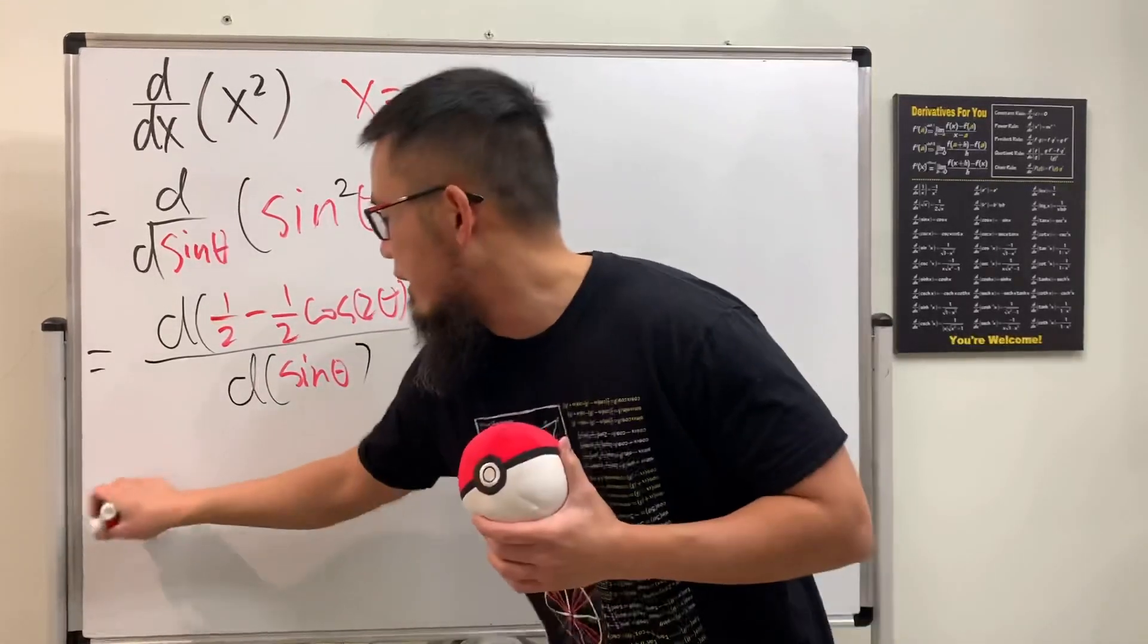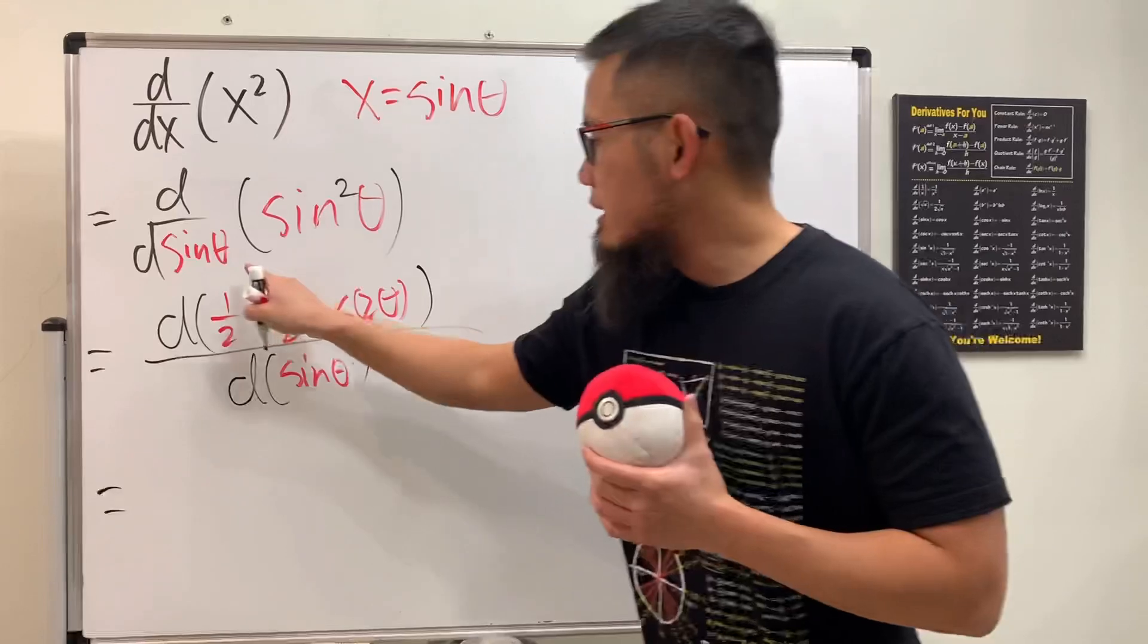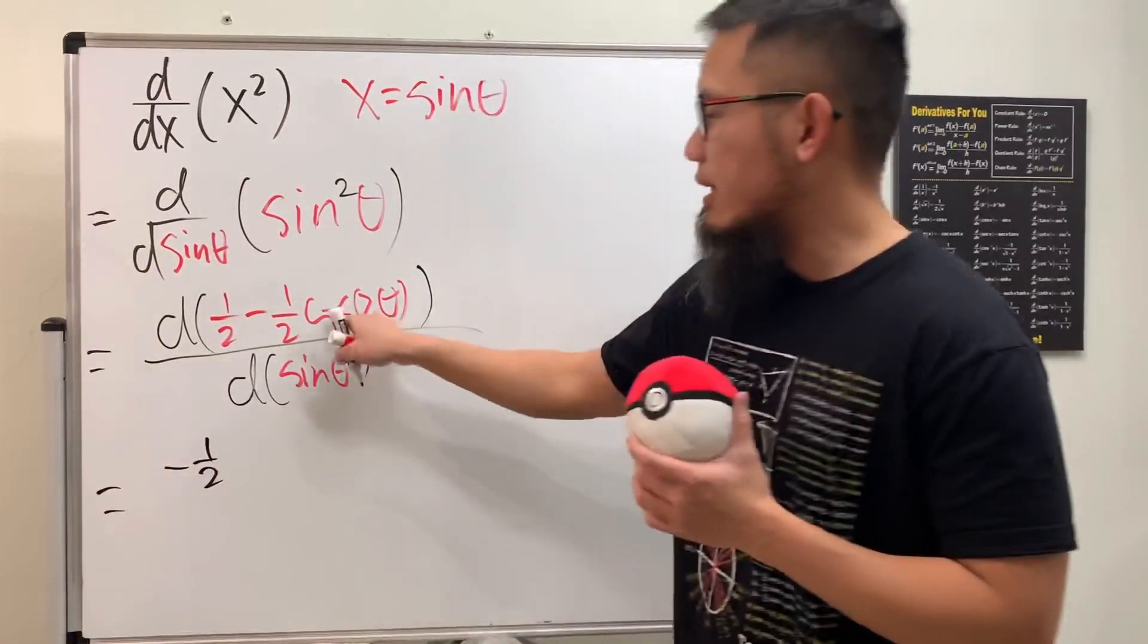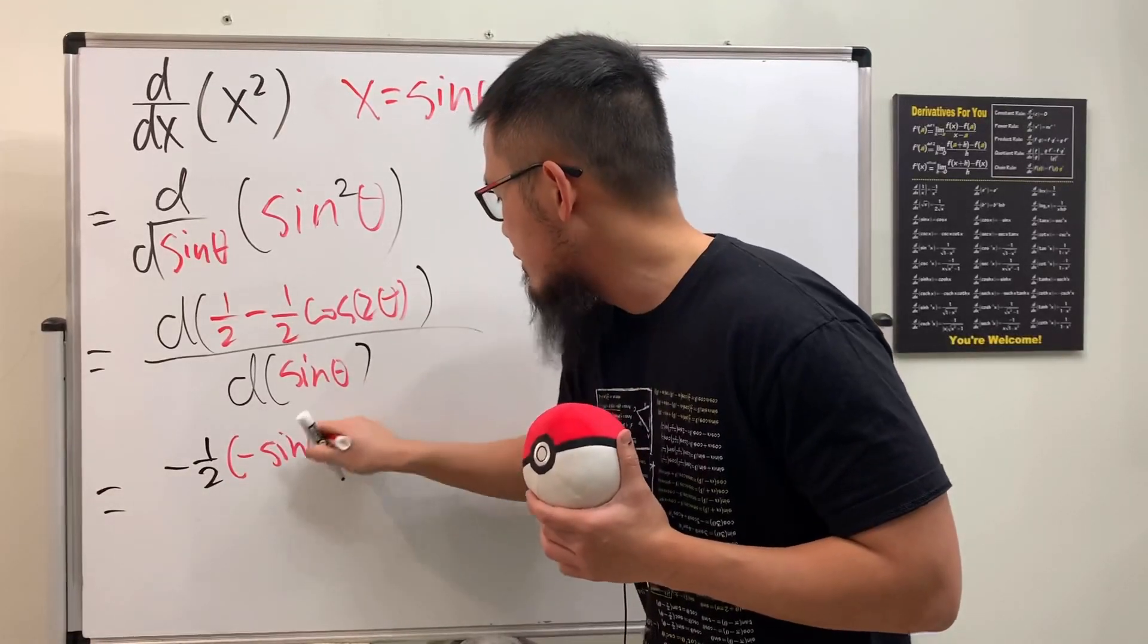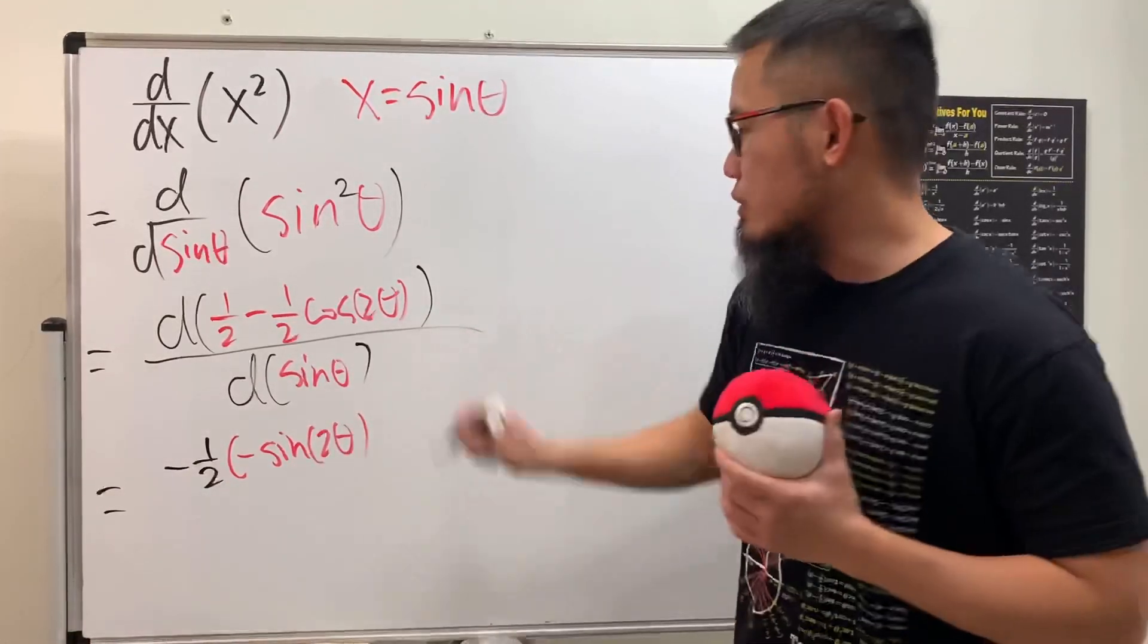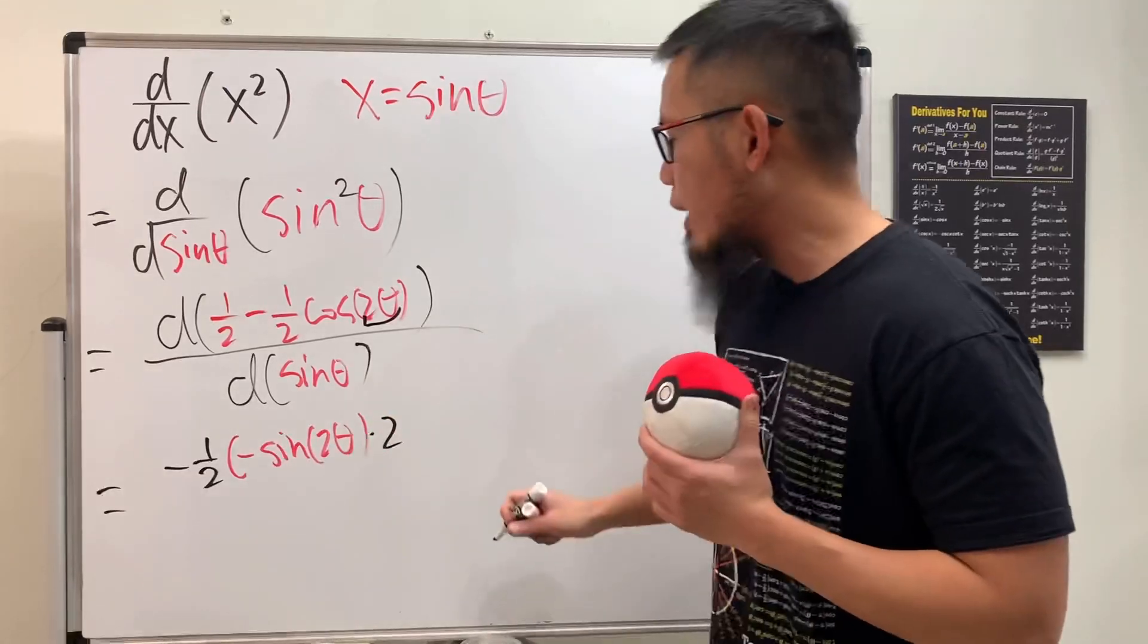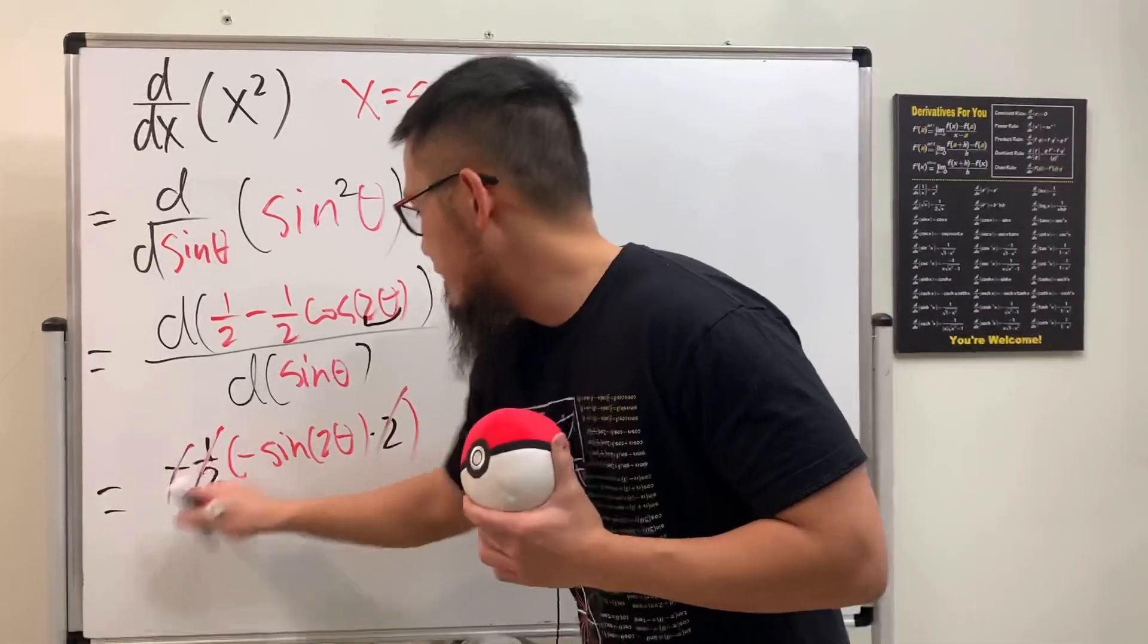Now differentiate this. This is just going to be zero on the top. We have negative 1/2, and then the derivative of cosine is equal to negative sine, and the input stays the same. Don't forget to use the chain rule, so multiply by the derivative inside, multiply by 2. So you see that this and that cancel, negative negative also becomes positive, which is very nice.